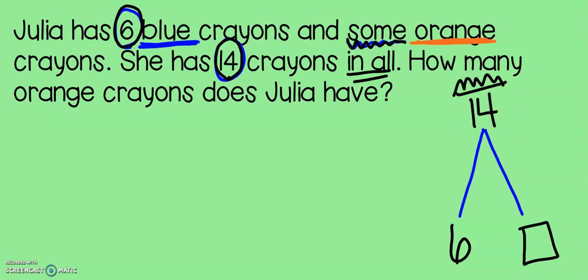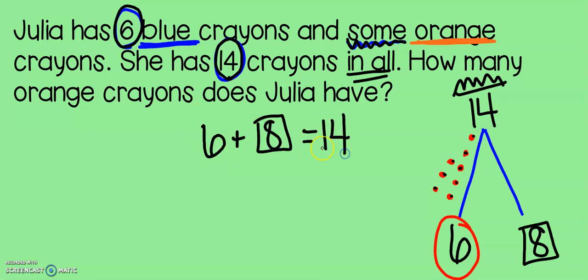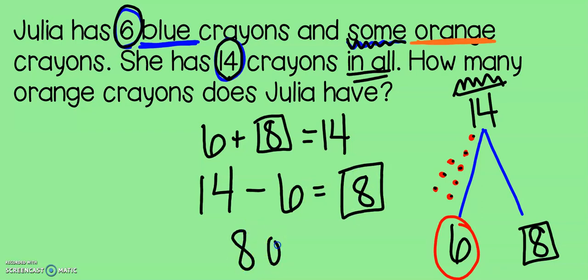Let's go ahead and use a counting up strategy to figure out how many orange crayons she has: six, seven, eight, nine, ten, eleven, twelve, thirteen, fourteen. Let's count those dots: one, two, three, four, five, six, seven, eight. That means she has eight orange crayons. So, six plus, that was our mystery number, eight equals 14. Or we could do subtraction. Remember, the king loves subtraction. He always comes first. Fourteen minus six equals eight. So, she has eight orange crayons.